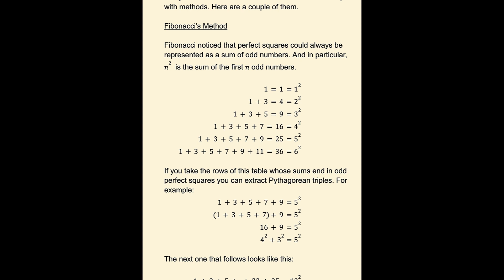A lot of other mathematicians had looked at Pythagoras, but Fibonacci noticed something that maybe some of the others hadn't, which is that perfect squares could always be represented as a sum of odd numbers. In particular, n squared is just the sum of the first n odd numbers.